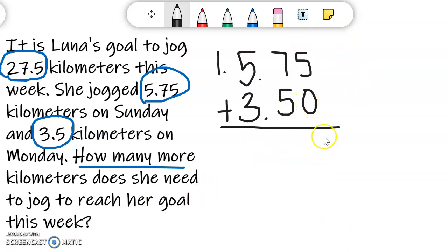So 5 plus 0 equals 5. 7 plus 5 equals 12. The 2 is going to go down low in the tenths place, and the 1 is going to regroup up top to the ones place. And then 5 plus 3 is 8 plus 1 more. Don't forget you're regrouping. It's 9. And I'm going to bring the decimal point straight down. So Luna has jogged 9 and 25 hundredths kilometers so far. So that's step one.